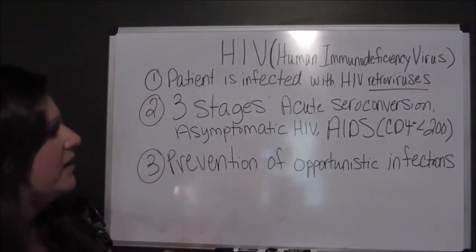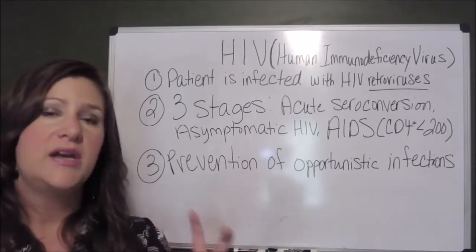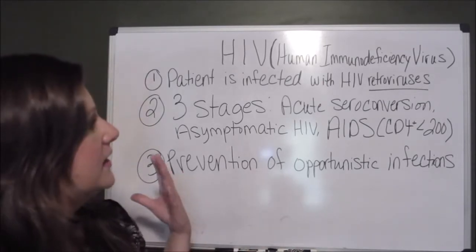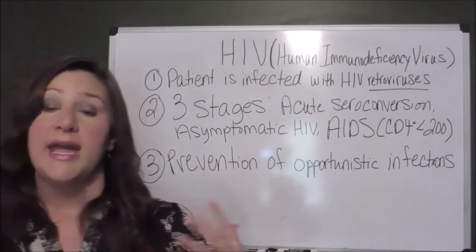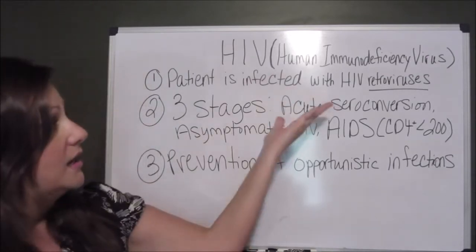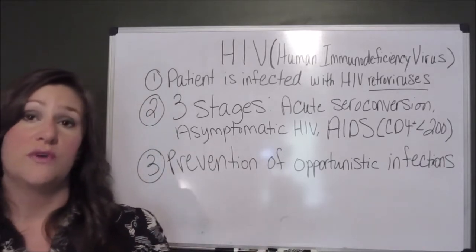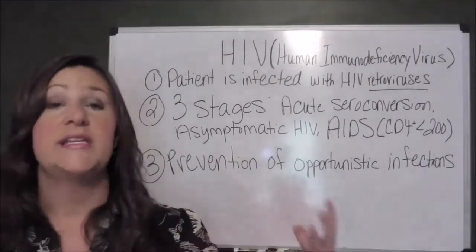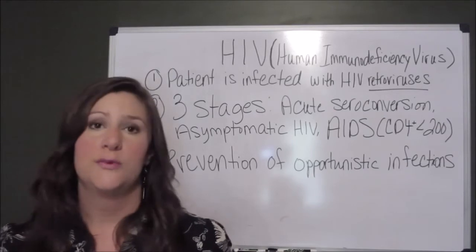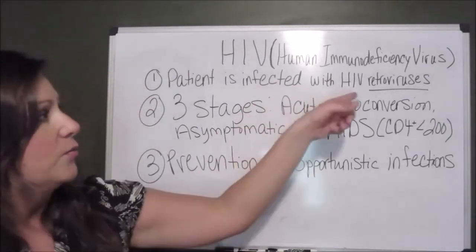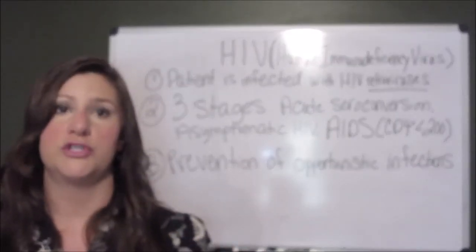Next, we'll talk about signs and symptoms. With HIV there are three distinct stages. The first stage is called acute seroconversion. In this stage the patient is infected with the retroviruses, and it can last for weeks or months. During this time the viral load is really high — these retroviruses are replicating like crazy.